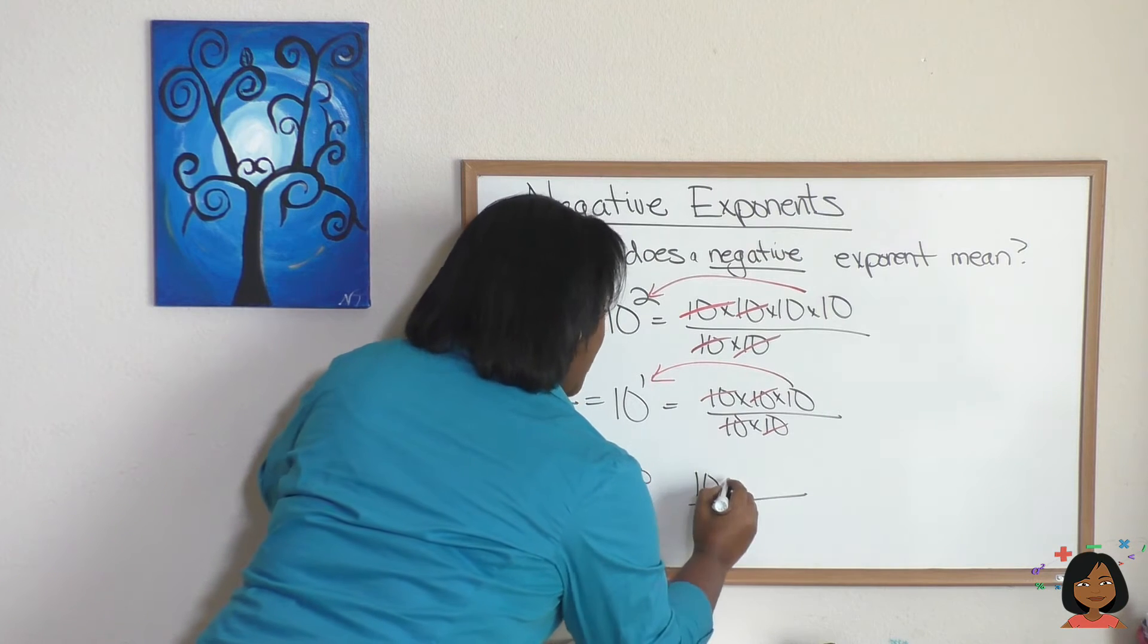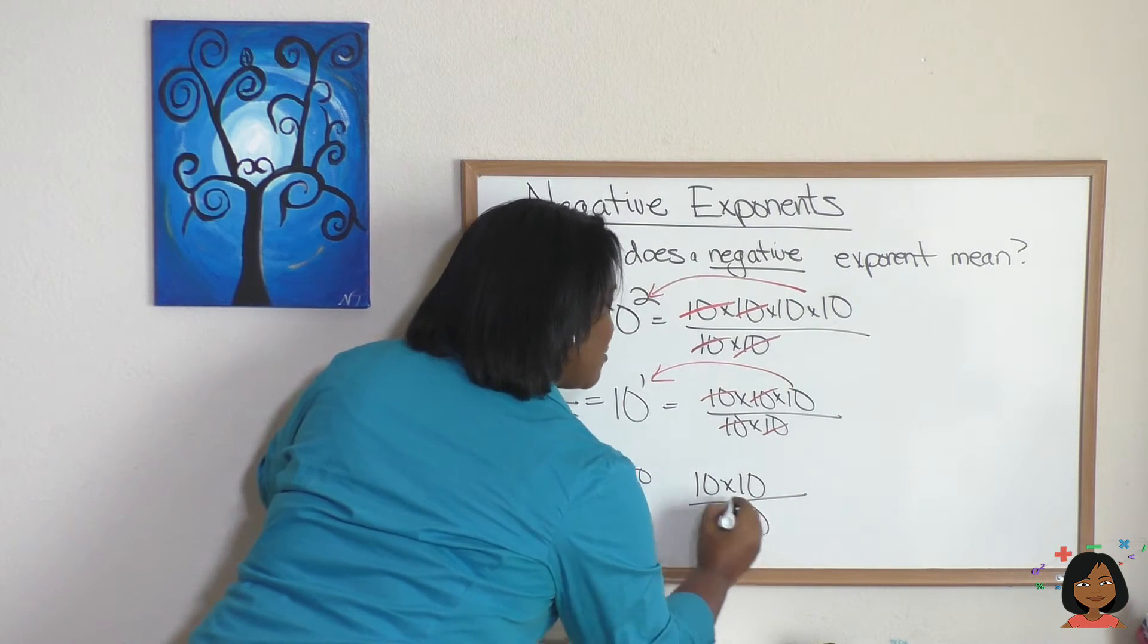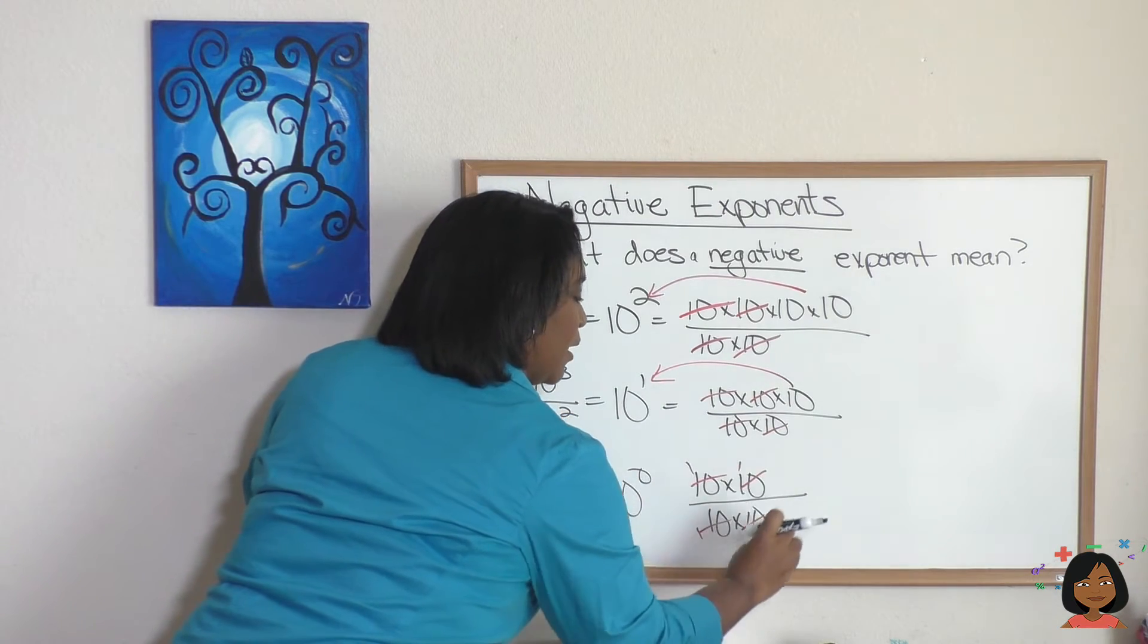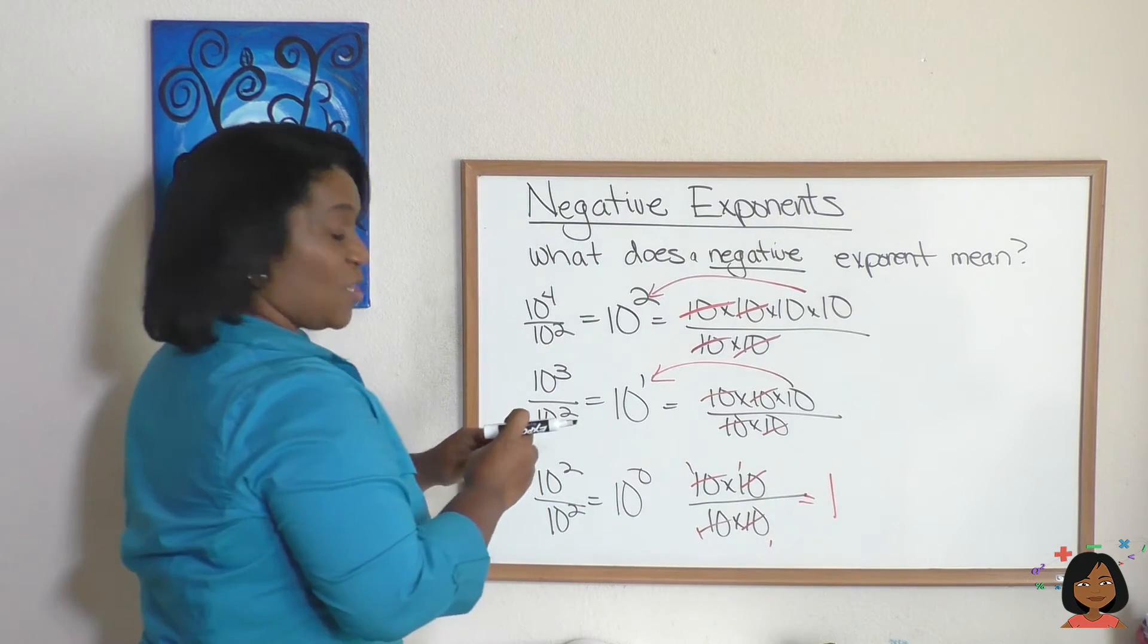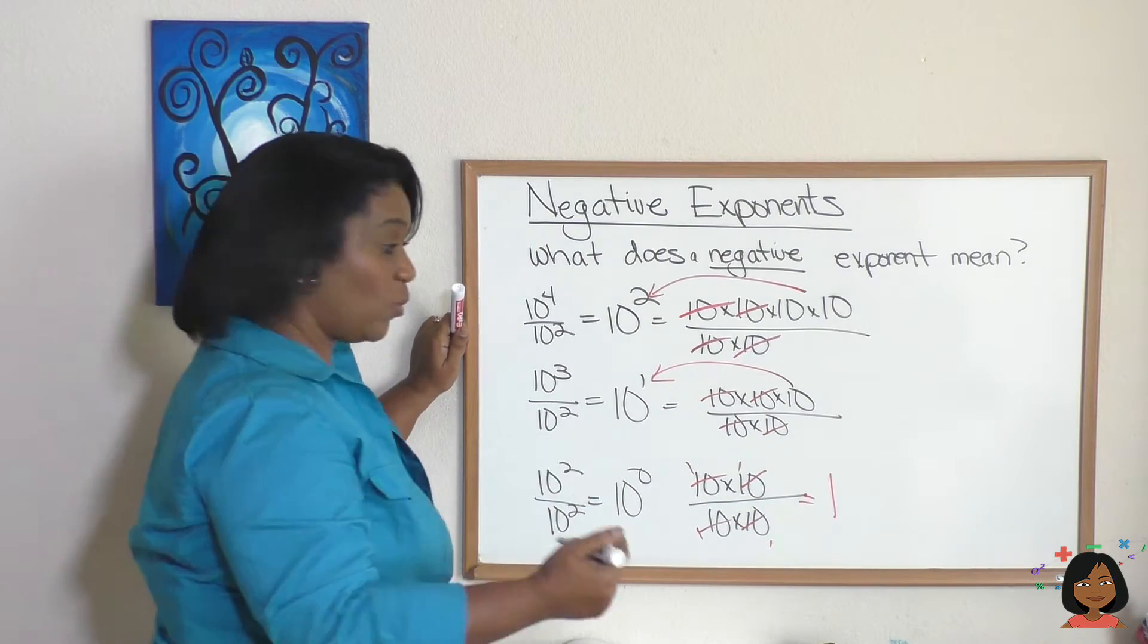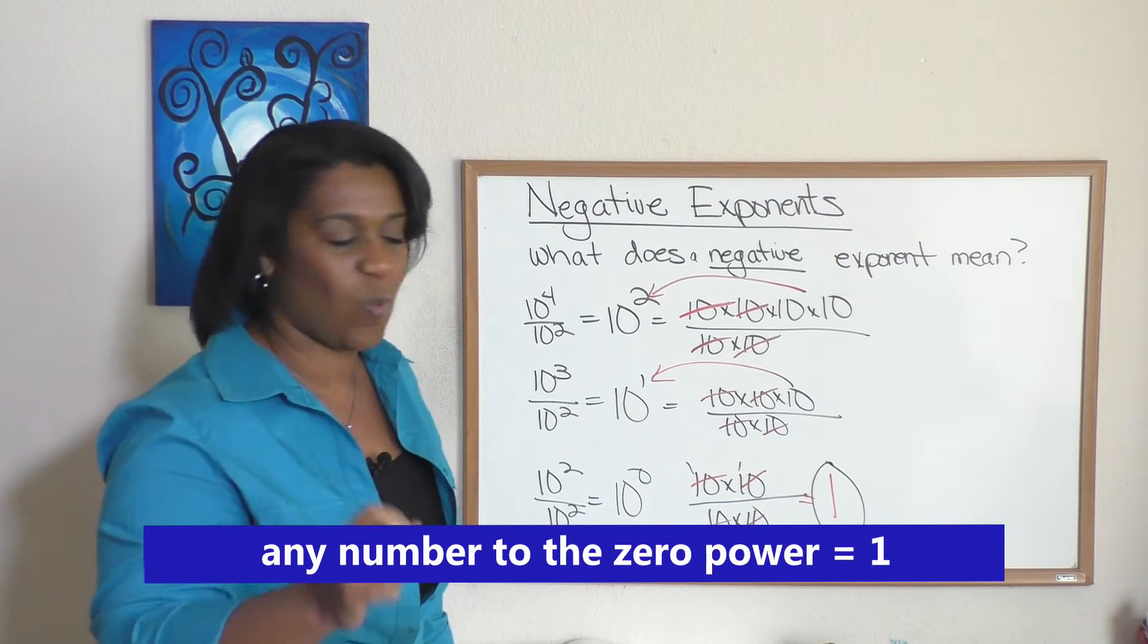10 times 10 over 10 times 10. Let's simplify. It equals 1. So the first thing I want to teach you, 10 to the 0 power equals 1. And actually, anything to the 0 power is going to equal 1.